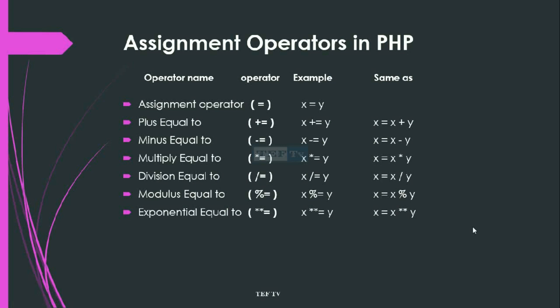Let's see what assignment operators are in PHP and how we can use these operators. First of all, we have the equals-to operator, which is also known as the assignment operator. It is used to assign a value to a variable or a constant, and is denoted as a single equal-to symbol.